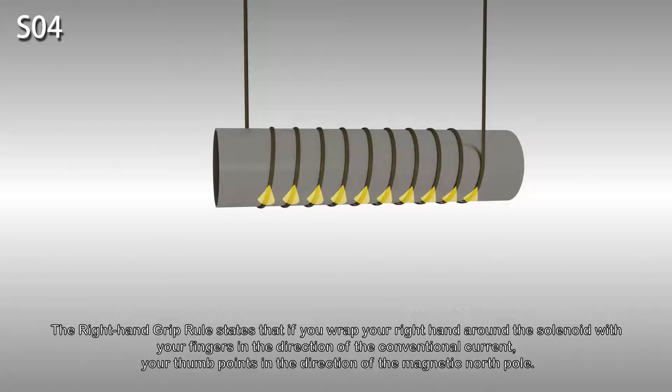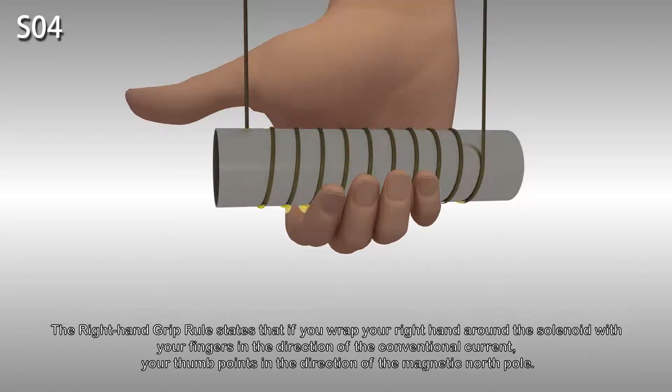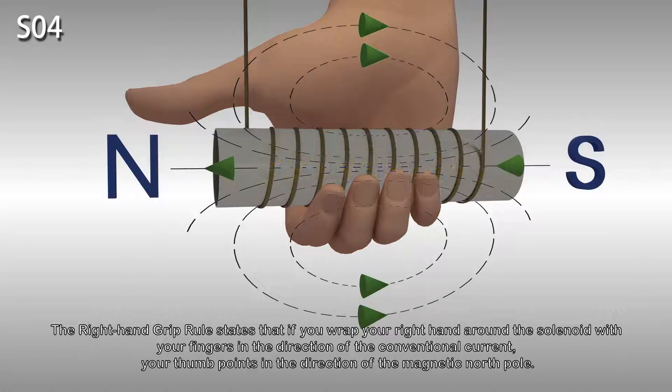The right-hand grip rule states that if you wrap your right hand around the solenoid with your fingers in the direction of the conventional current, your thumb will point in the direction of the magnetic north pole.